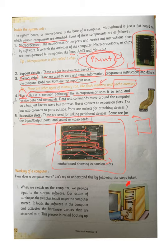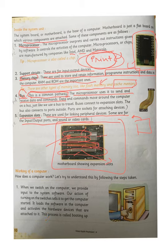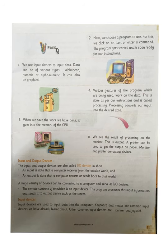Now let's see how a computer works. Step one: when we switch on the computer, we provide input to the system software. Our action of turning on the switch tells the computer to get started. It loads the software and activates the hardware devices attached to it. This process is called booting — the computer is getting ready to start.